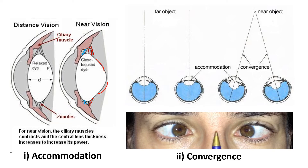Convergence is the simple idea that as something comes closer to you, your eyes converge medially to look at it. This is important because it's one of the indicators your brain uses to figure out how close something is. Your brain monitors whether both eyes are pointed in the same direction — parallel for a distant object — and as something becomes much closer, the convergence is much more pronounced.